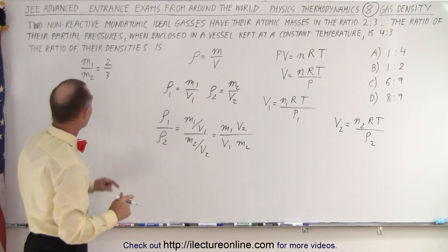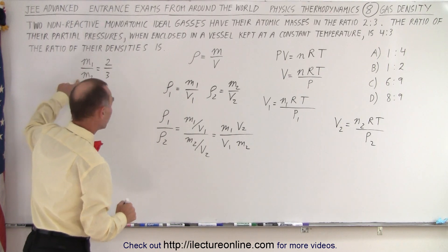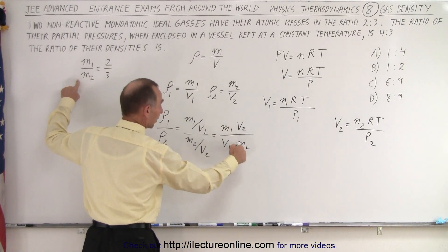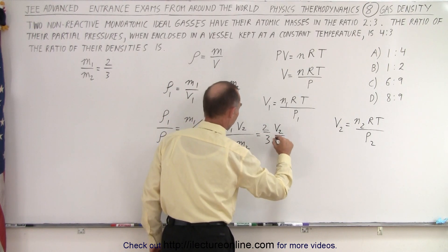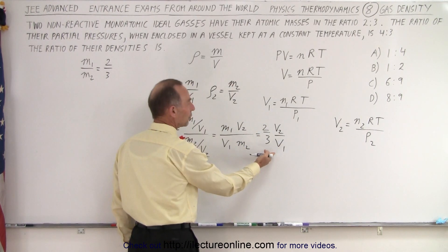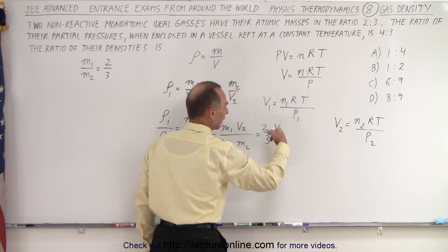So now what we need to do is realize that m1 divided by m2 is equal to 2 thirds. So this can be replaced by 2 thirds. So this is equal to 2 thirds v2 over V1. And now all we have to do is plug in these two and solve.